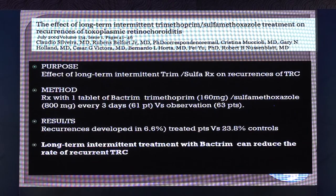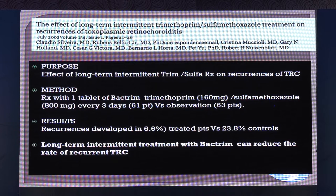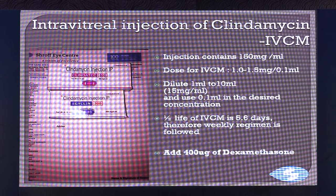Regarding treatment, there are various strains of toxoplasma. The worst strains are in South America, and work from there suggests giving trimethoprim-sulfamethoxazole combination twice a week or once every three days to keep toxoplasmosis from recurring.